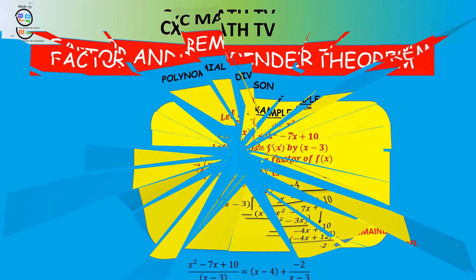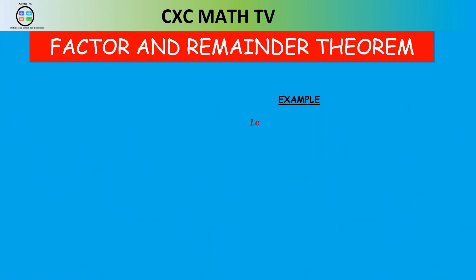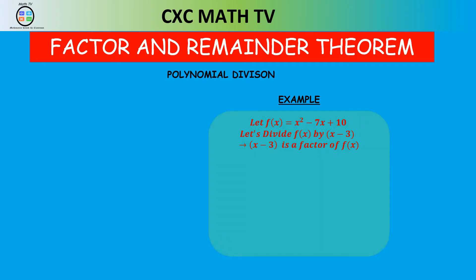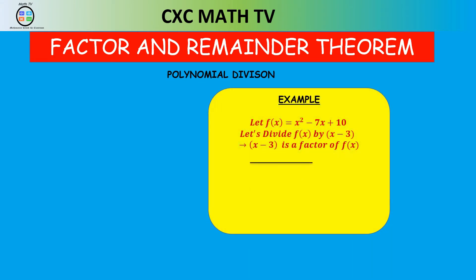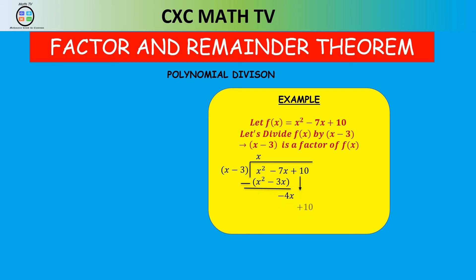Now in polynomial division, let's consider this function: f(x) = x² - 7x + 10. Let's divide f(x) by x - 3. x into x² leaves x. x times x is x². x times -3 is -3x. We subtract, and -7x minus -3x leaves -4x. Bring down +10. x into -4x goes -4. -4 times x is -4x. -4 times -3 is +12. We subtract, and the remainder is -2.